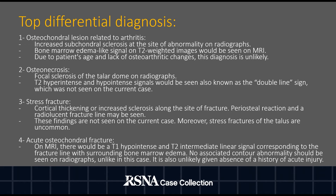For osteochondral lesions related to arthritis, there is usually increased subchondral sclerosis at the site of abnormality on the radiographs. On MRI, there is an area of bone marrow edema-like signal on T2-weighted images and ill-defined hypo-intense signal on T1-weighted images. There will be associated degenerative changes including joint space loss and osteophytes on radiographs and cartilage loss on MRI. Due to the patient's age and lack of osteoarthritic changes, this diagnosis is unlikely.